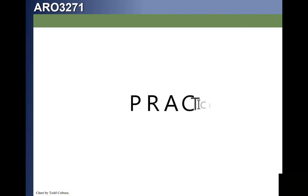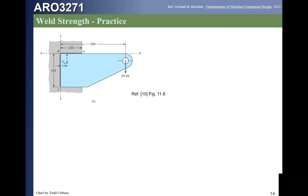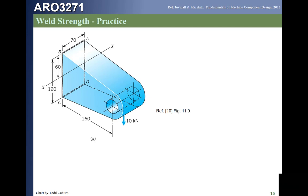Now let's look at some practice problems. The first problem is a 2D weld loaded in-plane. We can use the method from last time where we compute the properties of each weld segment, but we also notice this is an L weld, so we can apply the simplified in-plane procedure. The second problem uses the simplified box weld approach. The force is in-plane, but it causes an in-plane moment that gives out-of-plane stress components, so this uses the out-of-plane approach — we calculate the I of the weld and solve that way.